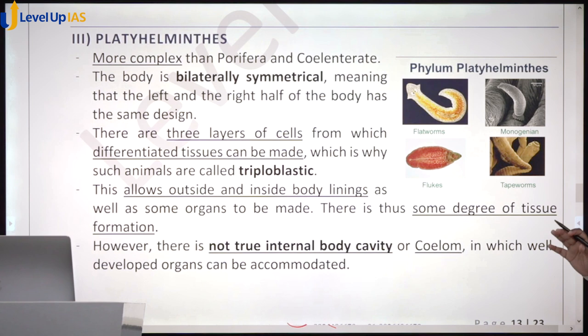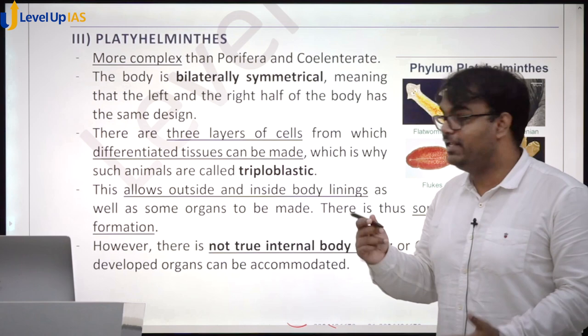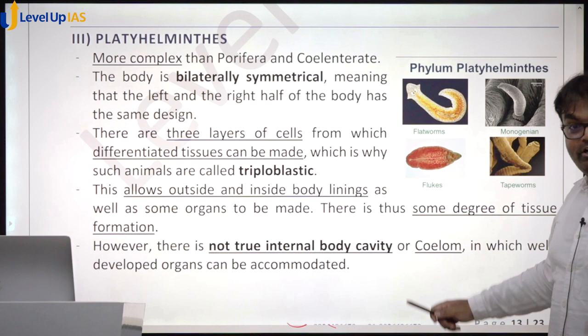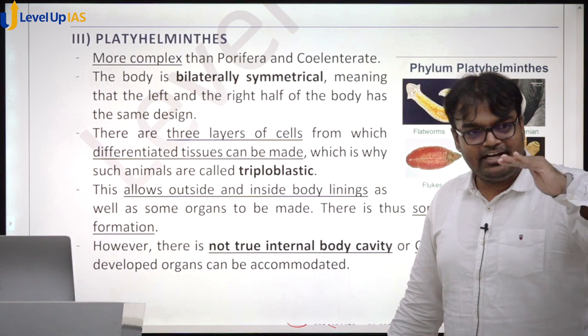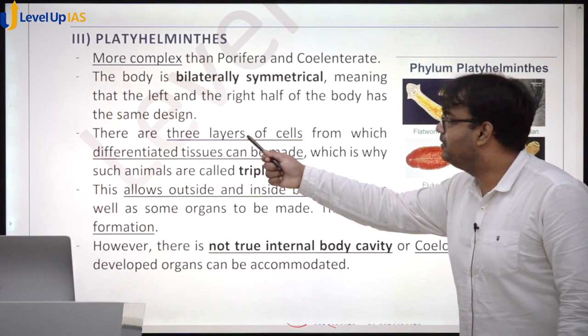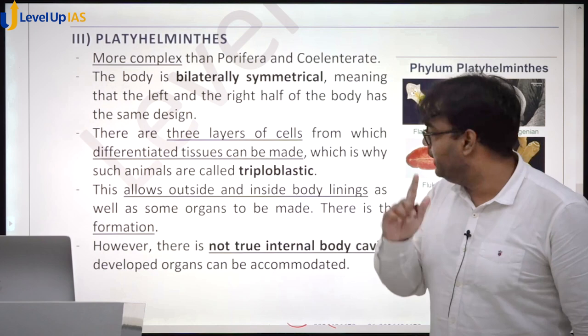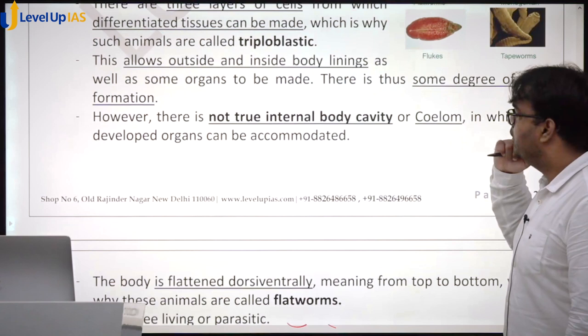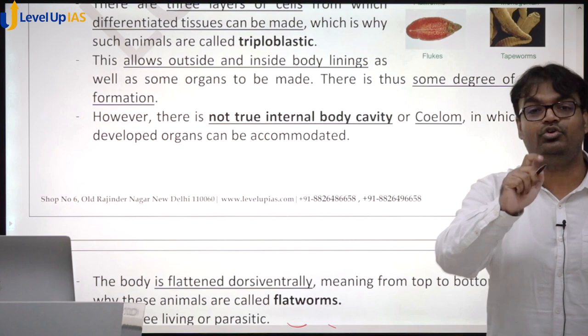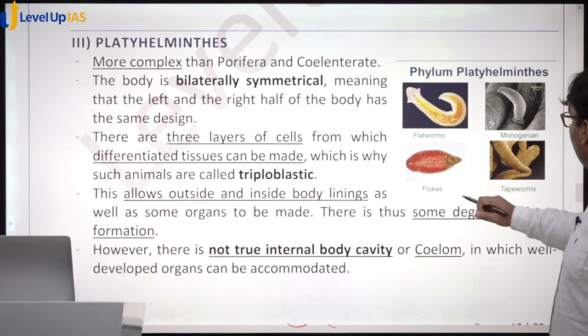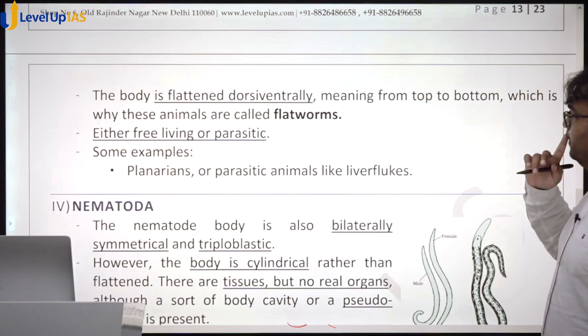Platyhelminthes are more complex than Porifera or Cnidaria. Here we find bilateral symmetry. They have three layers of cells and are thus triploblastic — in early stages three layers of cells form various tissues. Even here there is no inner cavity, so we do not call them coelomic, and well-defined organs are not present. Examples include flatworms, flukes, and tapeworms.